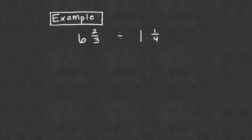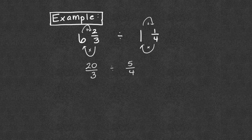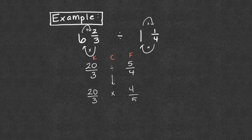Let's work through six and two-thirds divided by one and one-fourth. First, convert: three times six is 18, plus two is 20 — twenty-thirds. Then four times one is four, plus one is five — five-fourths. I highly suggest writing out the full division problem first before applying KCF. That way you can label keep, change, flip clearly. So we keep twenty-thirds, change to multiplication, and five-fourths flips to four-fifths.